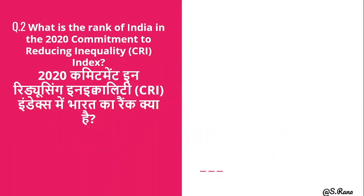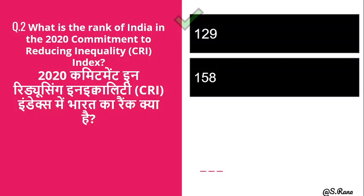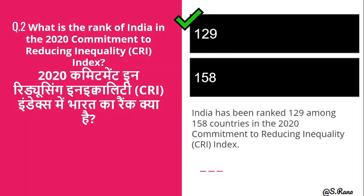Next question: What is the rank of India in the 2020 Commitment to Reducing Inequality Index? The rank of India in 2020 is 129. Out of 158 countries total, India's rank is 129. This index talks about inequality — addressing issues of poor vs. rich, girl vs. boy, and gender equality — and is used to track efforts to reduce inequality.